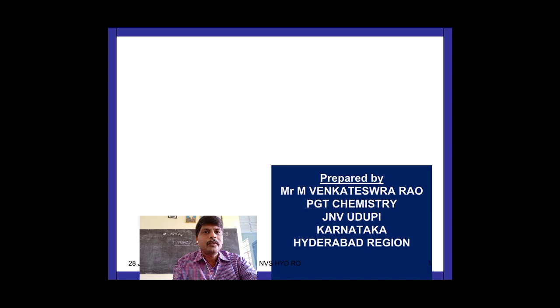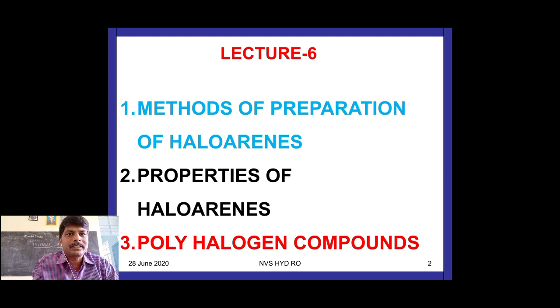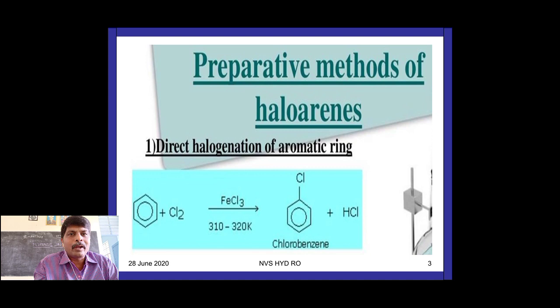Welcome students to the last part of this chapter on halo alkanes and halo arenes. In this part I will explain methods of preparation of halo arenes, properties of halo arenes, and polyhalogen compounds. First we will see methods of preparation of halo arenes — that means chlorobenzene, bromobenzene, iodobenzene, fluorobenzene and like compounds.